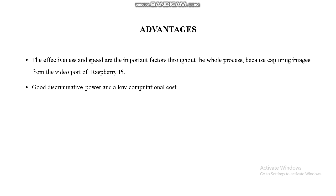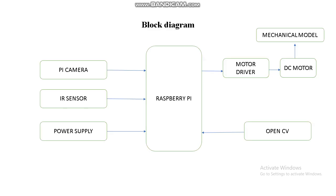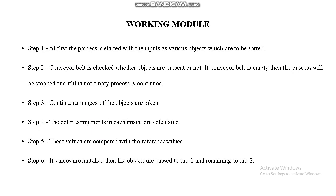In the block diagram of our proposed system, the Raspberry Pi camera is used to identify the object's shape and color. An IR sensor is also used to detect whether an object is present on the conveyor belt. With the Pi camera, objects can be detected, and using the motor driver, we can control the DC motor direction to segregate the objects.